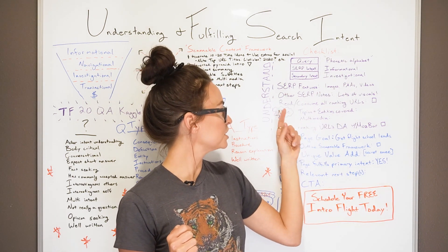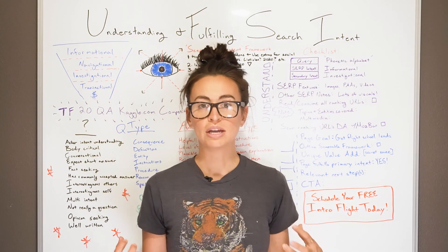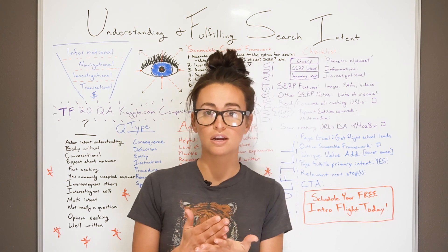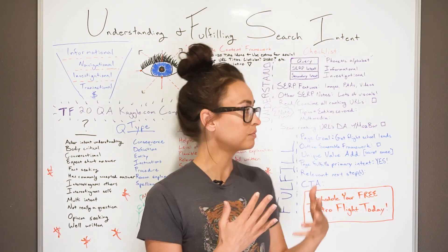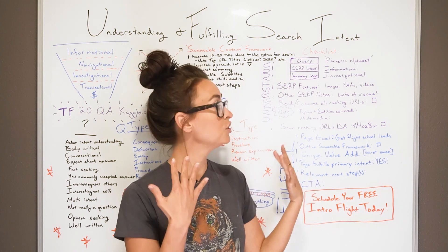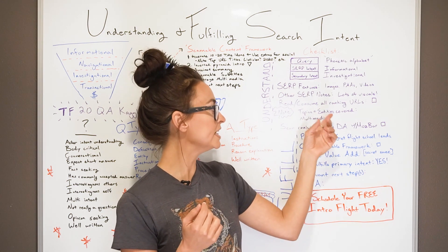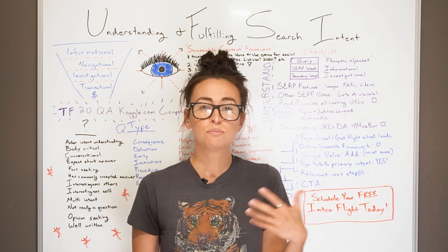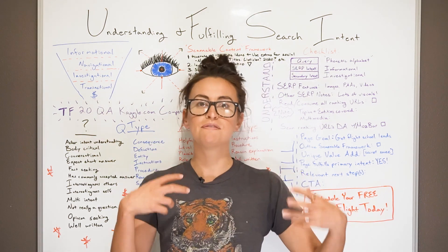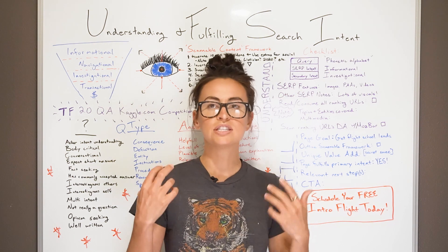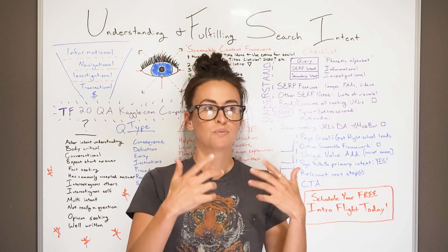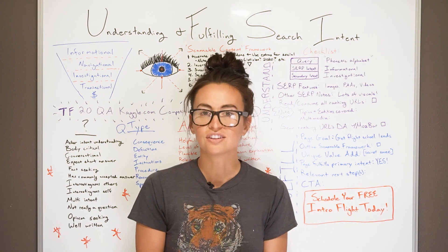The next thing you do is read and consume all of the ranking URLs — this is so, so important. If you're serious about ranking for a particular keyword, you should actively be consuming this content and making notes about topics and entities covered. What sort of multimedia are they using, what are the layouts, what does it feel like? You can really start to build a checklist of what that content looks like and what those expectations are.